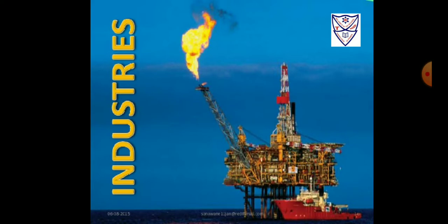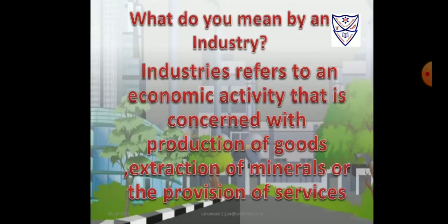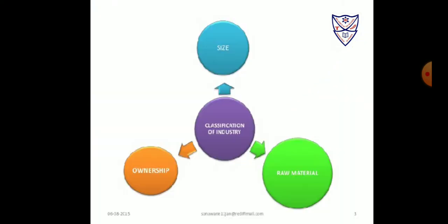What do we mean by industry? Industry is an economic activity which involves producing goods, extracting different minerals, and providing services. Examples of industries that produce goods include iron and steel industry; coal mining industry is an example of extracting minerals; and tourism industry is an example of those who provide services. Industries are classified on the basis of raw materials, size, and ownership.